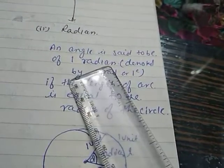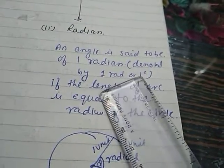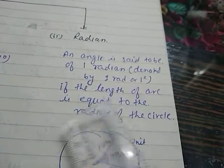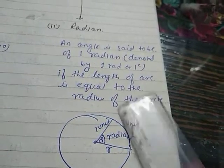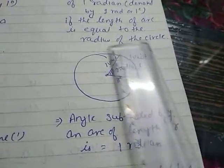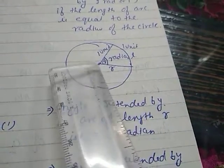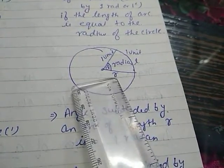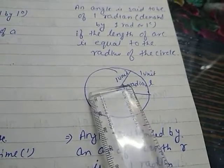The second measurement is radian. An angle is said to be of one radian, denoted by 1 rad or 1c, if the length of the arc is equal to the radius of the circle. Consider a circle: the length of arc l and radius r — when the radius is equal to the length of arc, i.e., l = r, then the angle formed is called one radian.